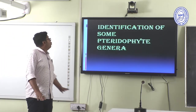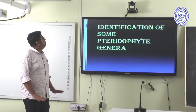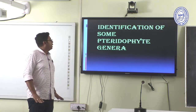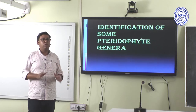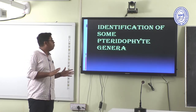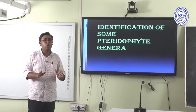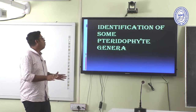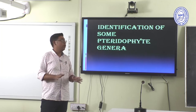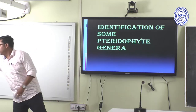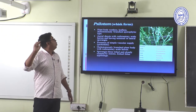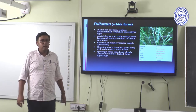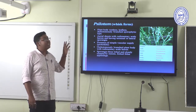We now move on to the identification of some Pteridophytic genera. First is Psilotum, known as the whisk fern. The plant body is rootless, leafless, with a dichotomously branched sporophyte.